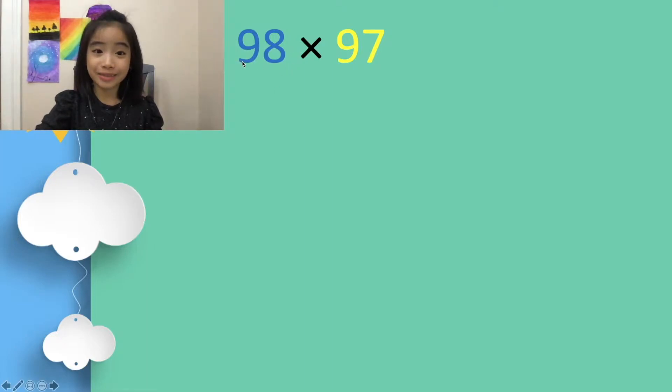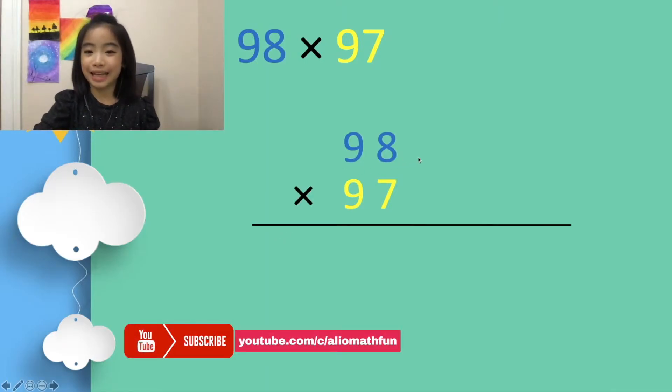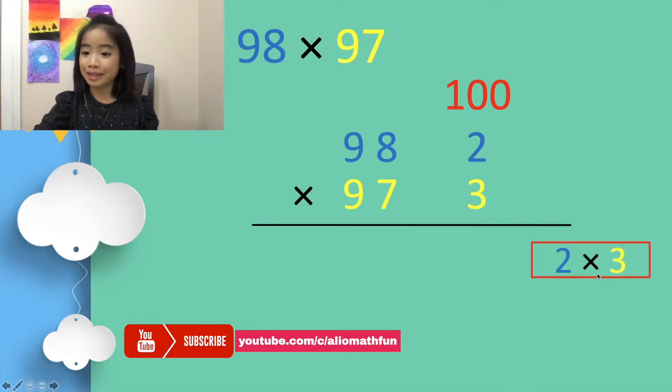First, let's use 98 × 97 as our example. We write it in our normal vertical form. From 98 to 100 is 2 more, and from 97 to 100 is 3 more. Now, let's multiply these two numbers together. 2 × 3 equals 6. And we put a 0 in front of the 6.